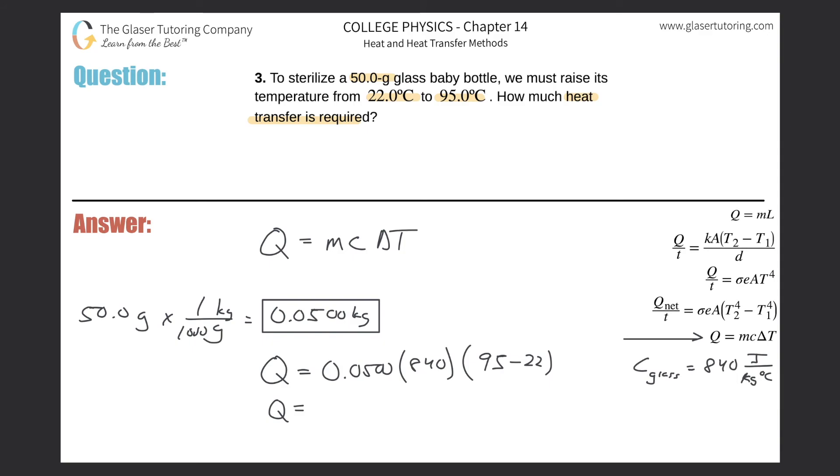So 0.05 multiplied by 840 multiplied by 95 minus 22. And we get about 3066. So about 3.07 times 10 to the third. And remember it's heat energy and therefore it's in joules.